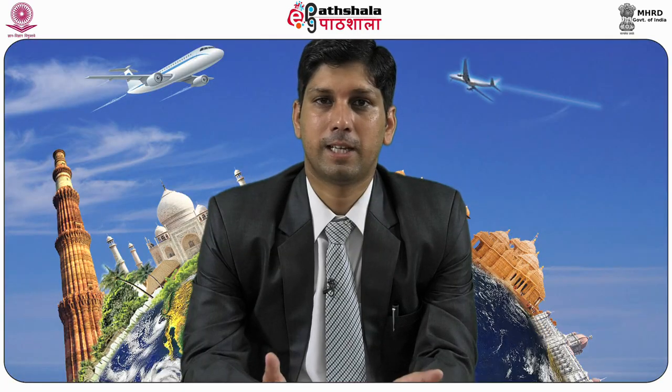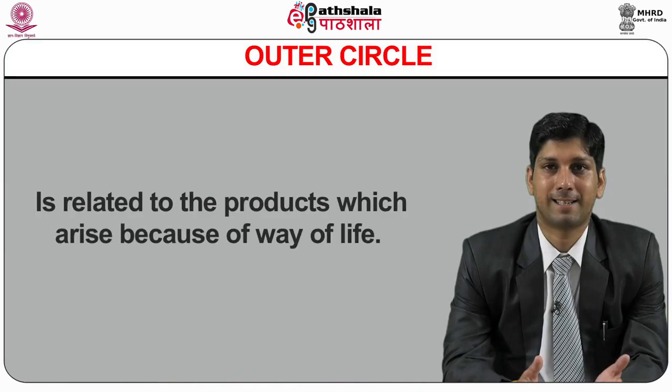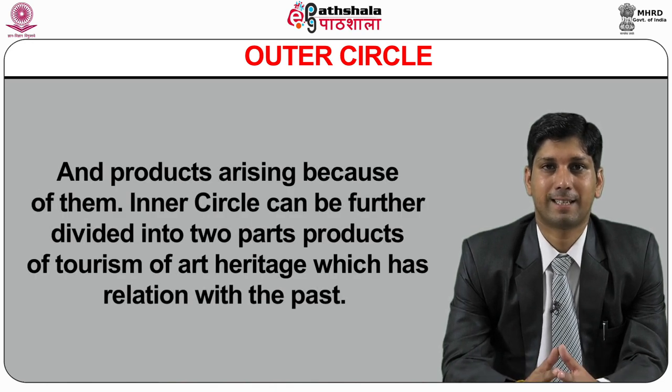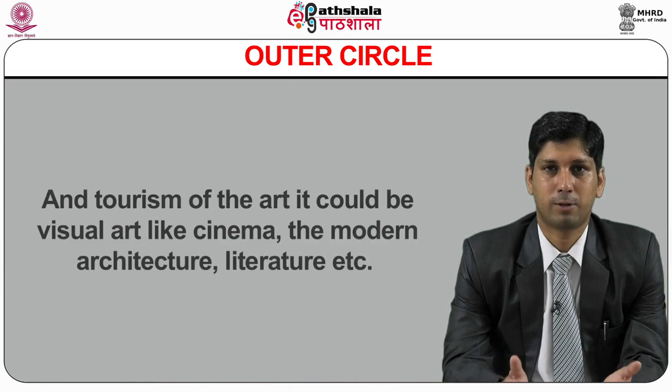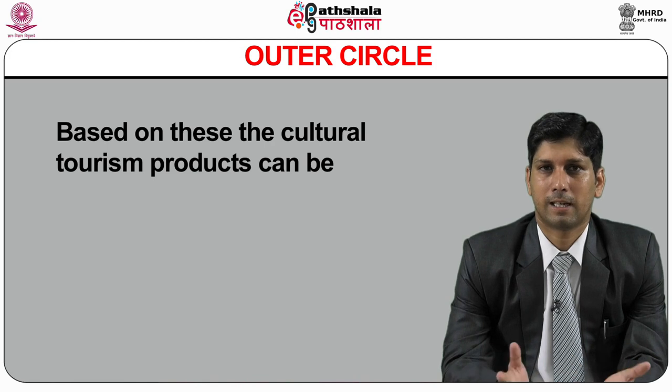Culture can be shown best by two circles. The inner circle deals with products related to more basic elements of culture — how people produce culture — while the outer circle relates to products arising from the way of life. The inner circle is further divided into: tourism of art heritage (related to the past) and tourism of art (visual art like cinema, modern architecture, literature). The outer circle has two demarcations: lifestyles — encompassing belief systems, food and cuisine, traditions, folkways and folklore — and the creativity sector such as fashion, design and entertainment.